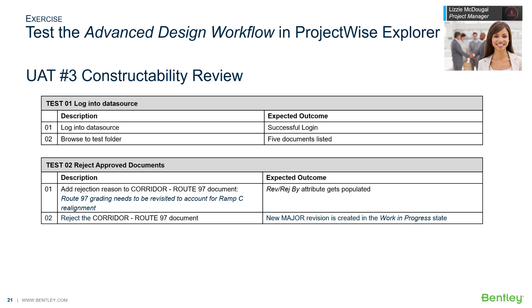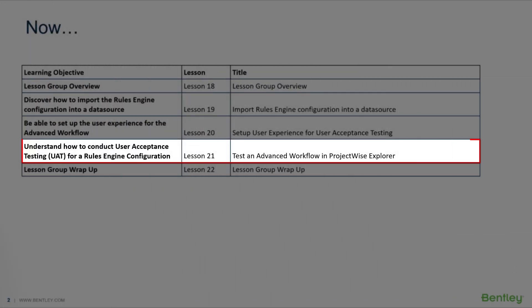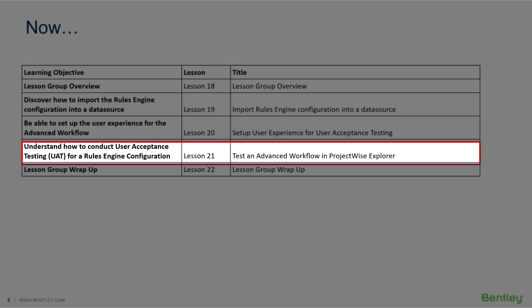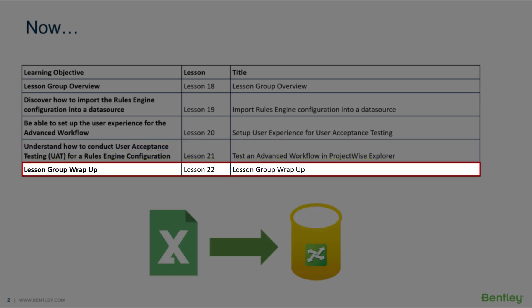We are now done with UAT. Congratulations! You now know how to conduct user acceptance testing, or UAT, for a rules engine configuration. We are now ready to wrap up this lesson group.